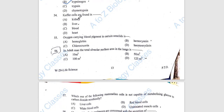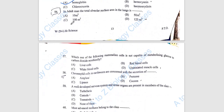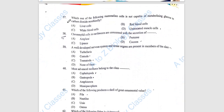Question 54: Kupffer cells are found in the liver. Question 55: The oxygen-carrying blood pigment in certain annelids is hemoglobin. Question 56: In adult men, the total alveolar surface area in the lungs is option C, 57.